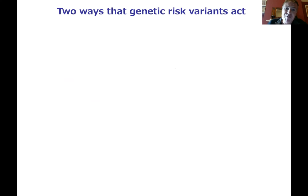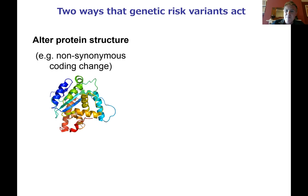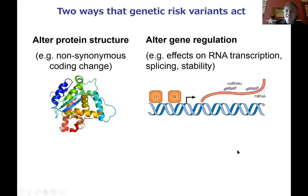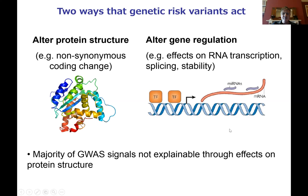There are two ways that genetic risk variants can impact on a gene's function and confer risk to a psychiatric phenotype. The most well-known are those that alter protein structure — for example, an amino acid change from a coding sequence change. The other mechanism is through effects on gene regulation, such as RNA transcription, splicing, or stability. The majority of GWAS signals for complex traits are not explainable through effects on protein structure — for example, the PGC2 schizophrenia paper showed only 10 loci could plausibly be accounted for by non-synonymous polymorphisms. Therefore, almost by default, we assume effects are through gene regulation.